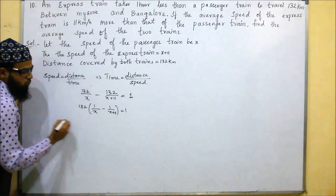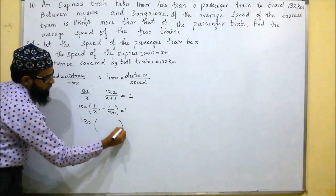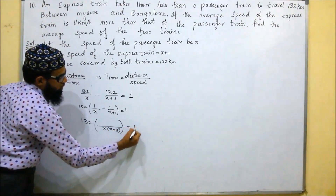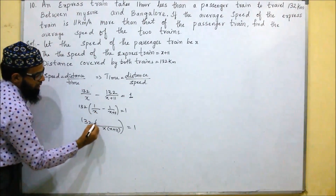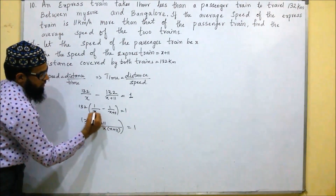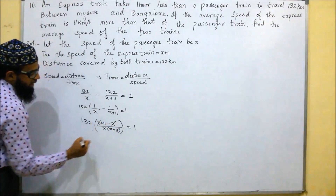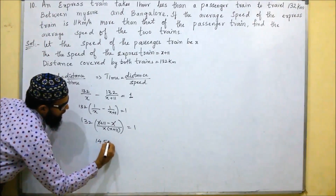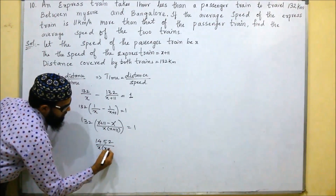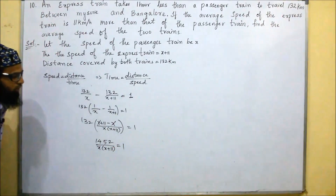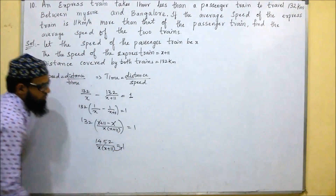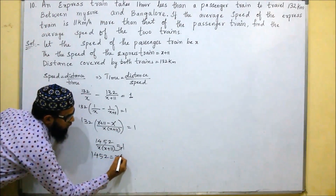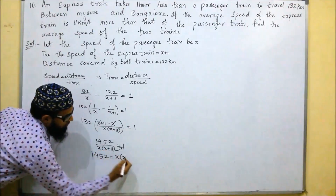Taking the LCM of x and (x+11), which is x(x+11), we get: 132 times [(x+11 minus x) divided by x(x+11)] equals 1. That simplifies to 132 times 11 equals x(x+11), which gives 1452 equals x squared plus 11x.